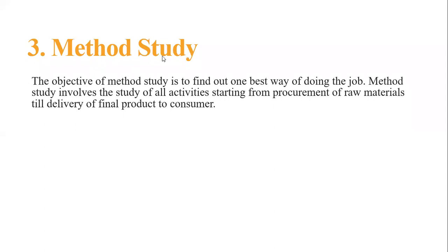The third point is method study. The objective of method study is to find the best way of doing the job. This method study involves the study of all the activities starting from the procurement of raw materials till the delivery of the final product to the consumers. As mentioned in functional foremanship, the route clerk will find the best method of doing a particular job.